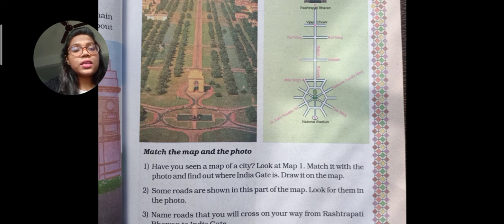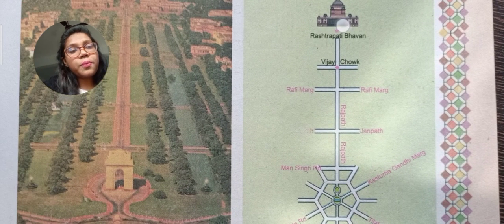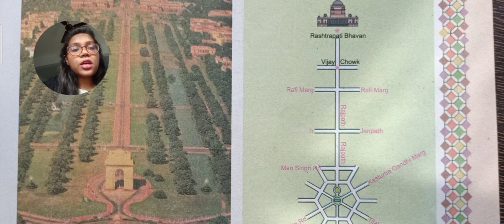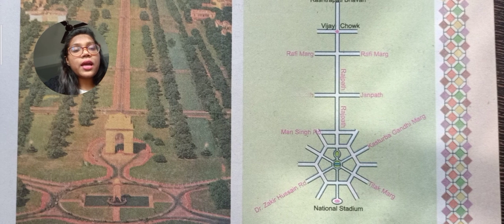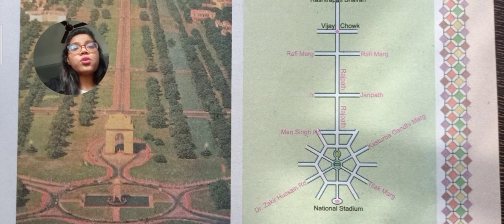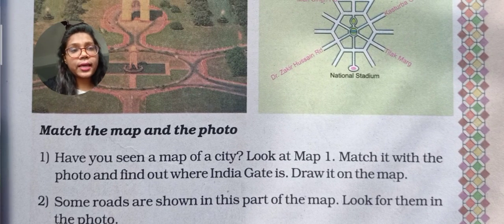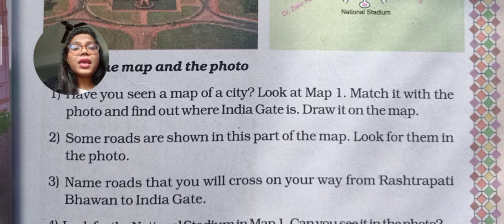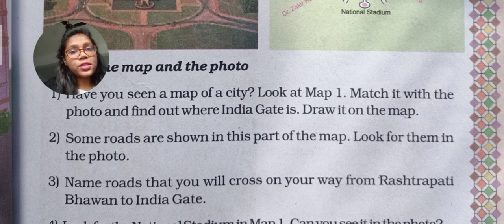This is how you indicate India Gate on the map. Some roads are shown in this part of the map — look for them in the photo. Between Rashtrapati Bhavan and India Gate there are many roads: Rafi Marg, Rajpath, Janpath, Manasi Road. These four roads are the main ones to reach India Gate. Name the roads that you will cross on your way from Rashtrapati Bhavan to India Gate.